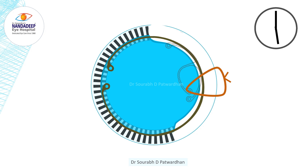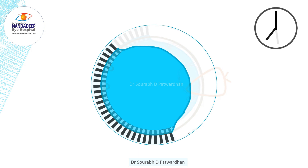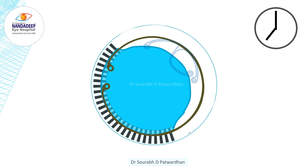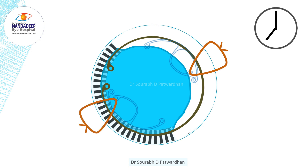If the subluxation is more than that — say more than six clock hours and the lens is dangling — then along with CTR we have to use either a double Sioni ring or two CT segments so that on both sides the lens and bag is attached to the sclera.